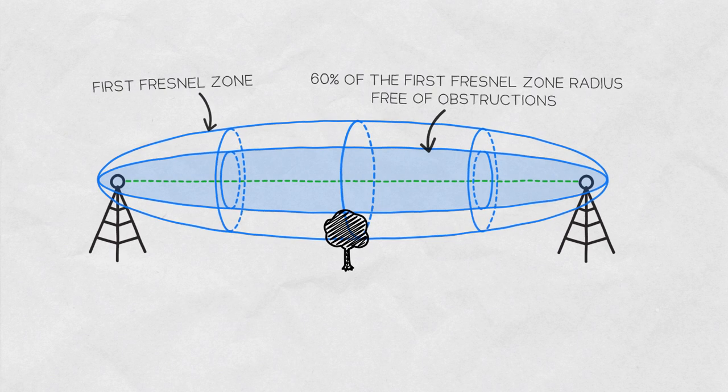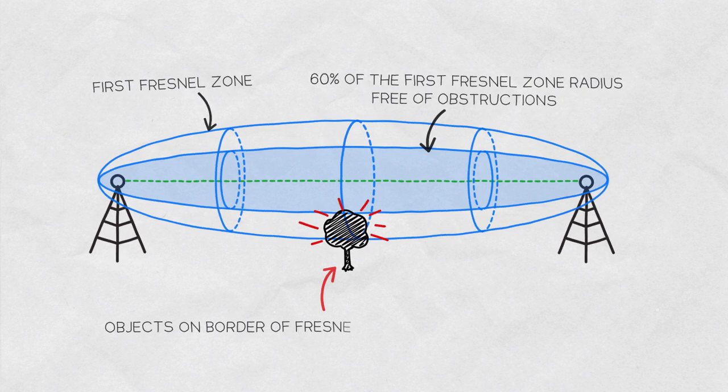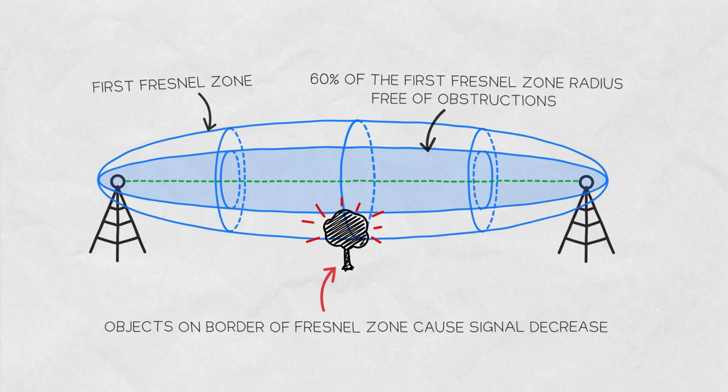If an object is at the border of the first Fresnel zone, it can cause a decrease of the received signal level, also known as fading.